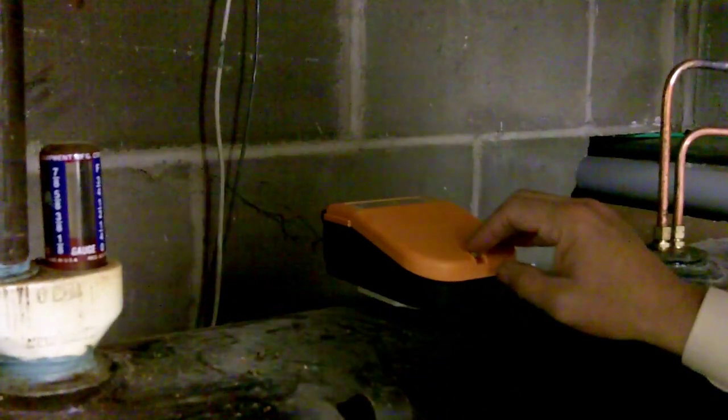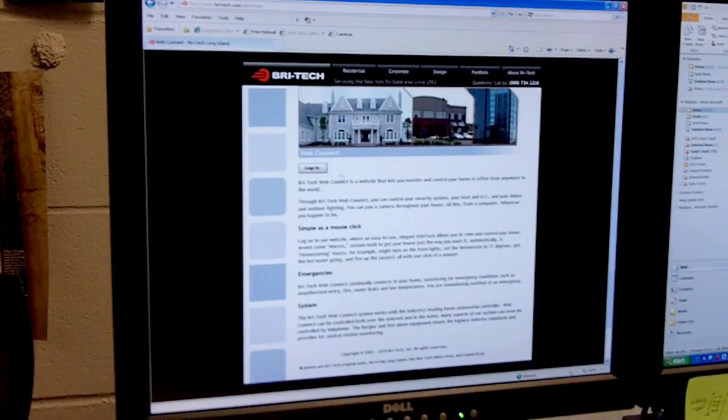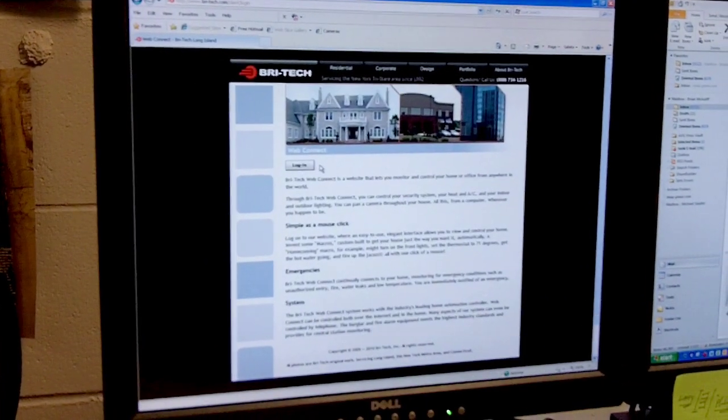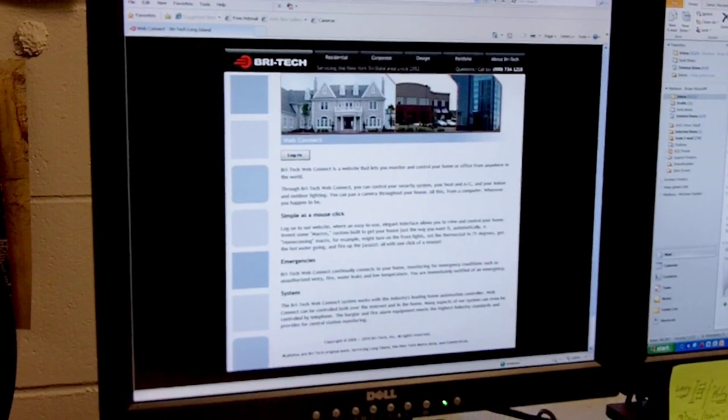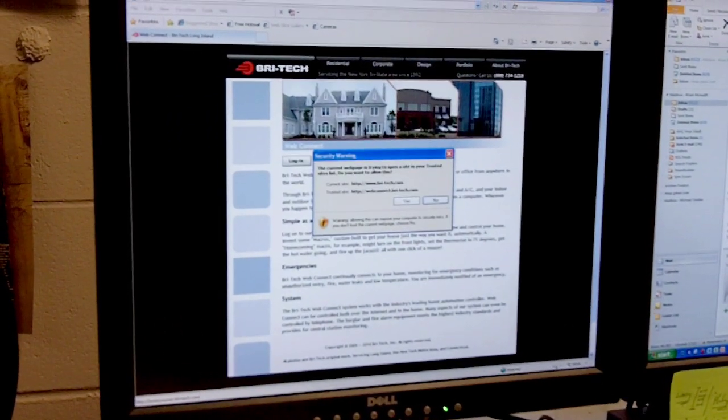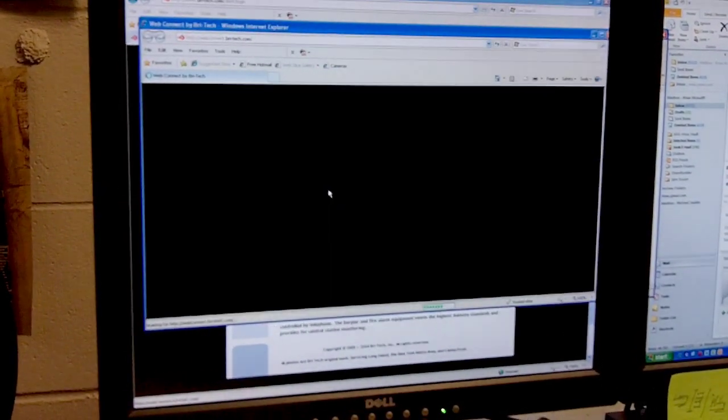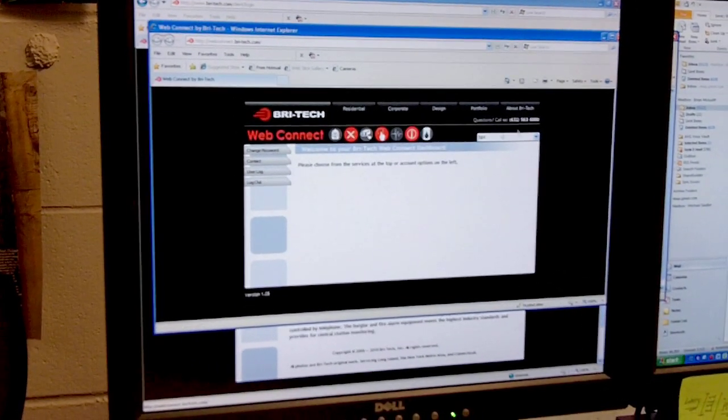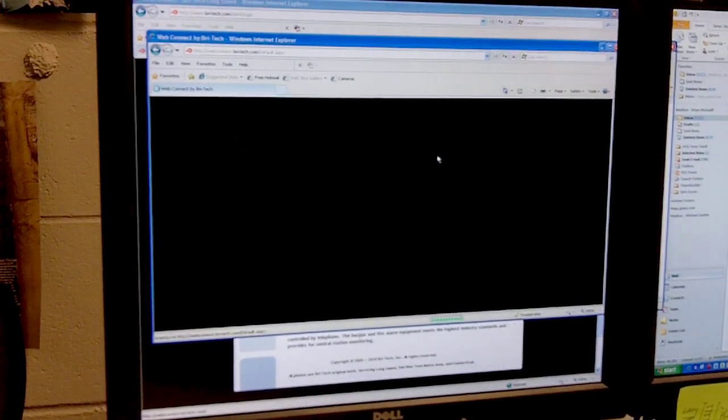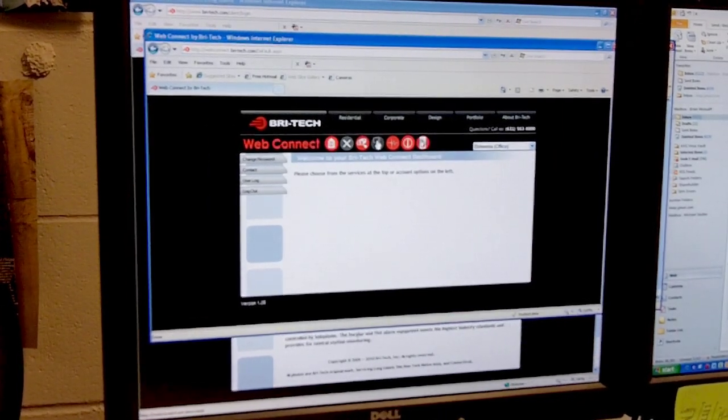After that, the configuration is handled all online. So basically, I've got a new sensor in on the oil tank, and I'm going to log in at brighttech.com. I'm going to log in to my WebConnect dashboard, select the location, and I see that I have a new icon here.